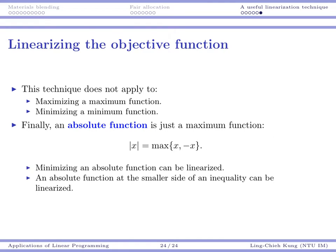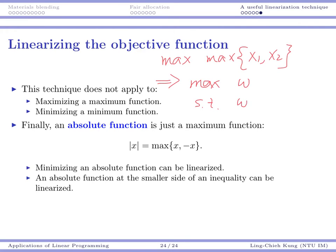Because in those cases, once you replace the maximum function with an equality constraint, you cannot replace it into the inequality constraint you need. For example, suppose you are maximizing a maximum of two variables. You replace it by W, and W would be equal to the maximum of both of them. But because you are maximizing W, this equality becomes less than or equal to, putting the maximum function at the larger side of an inequality — and then you cannot linearize it.